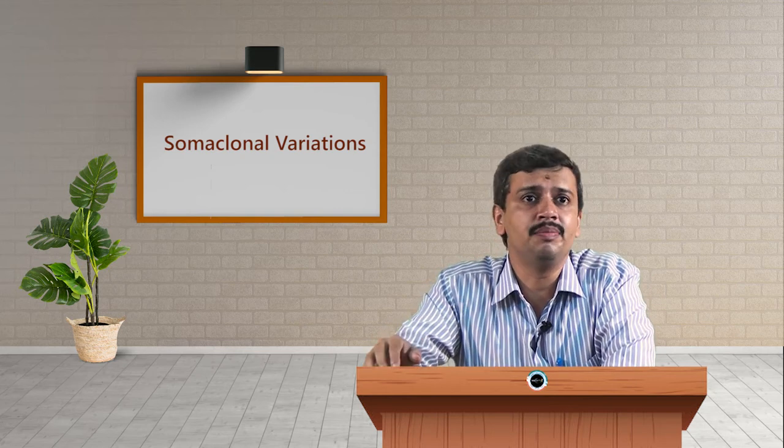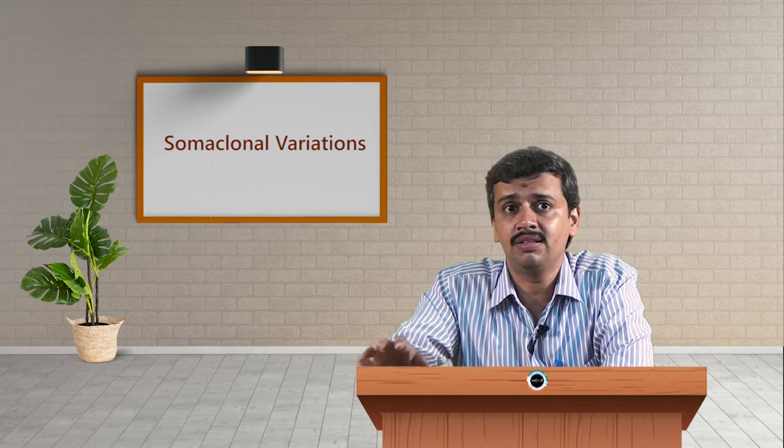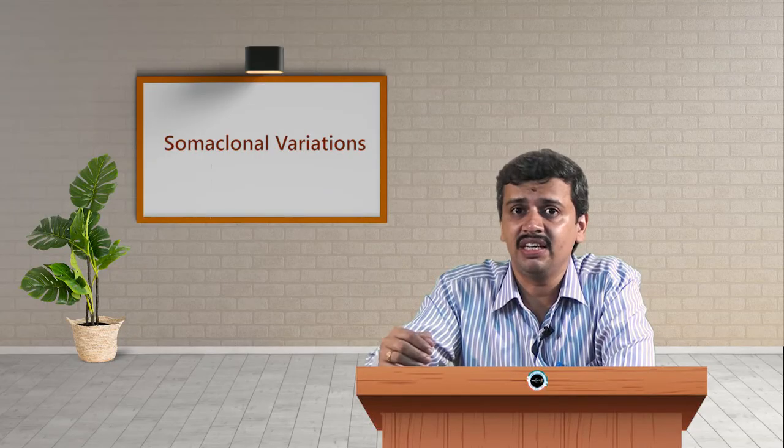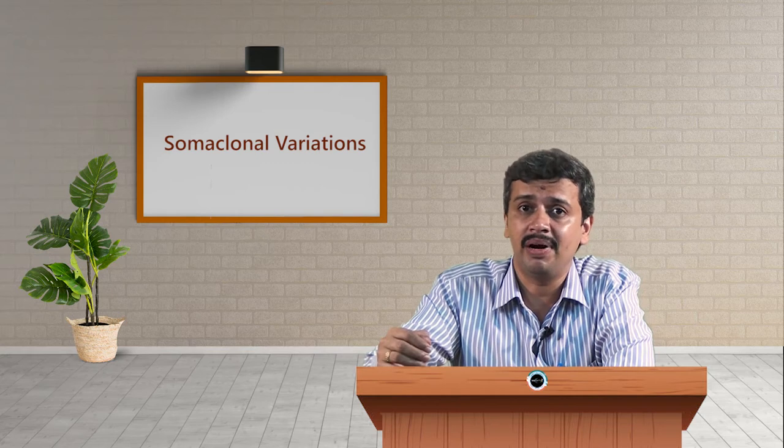What are the bases of somaclonal variations? You can categorize them into two major factors. Number one: the expression of chromosomal mosaicism or genetic disorders. The second one is because of spontaneous mutations due to cultural conditions. Mutations — a sudden change in the genome — could be due to varied nutrient or cultural conditions and mutagenic effects of metabolic products or byproducts which tend to accumulate during the course of tissue culture conditions in the media.